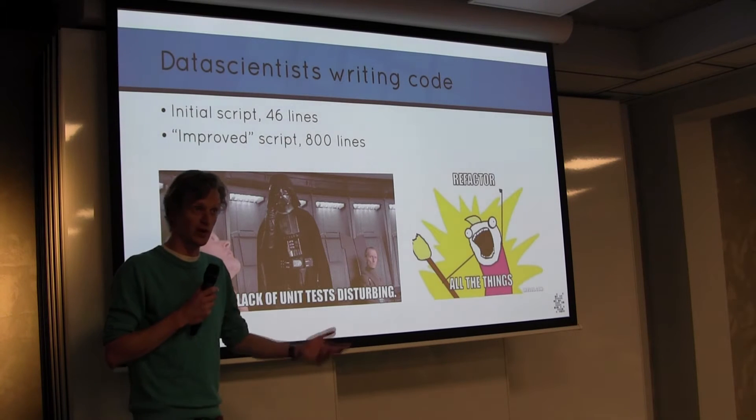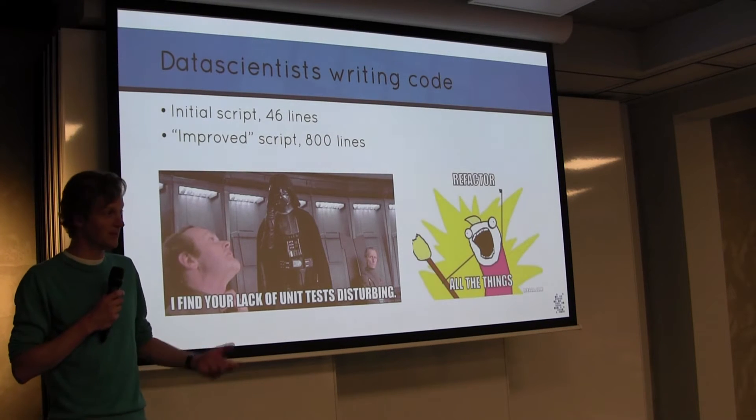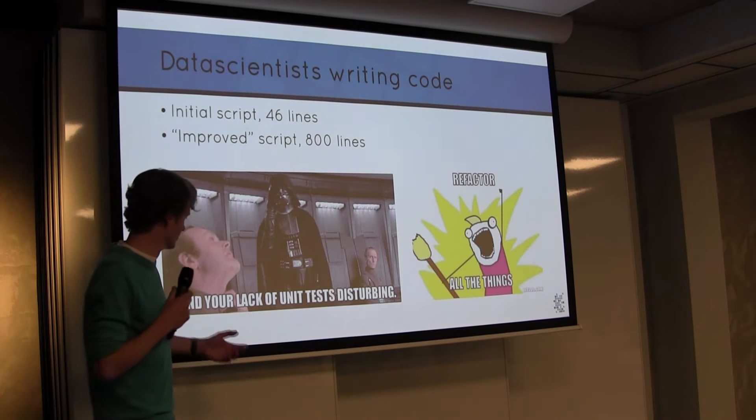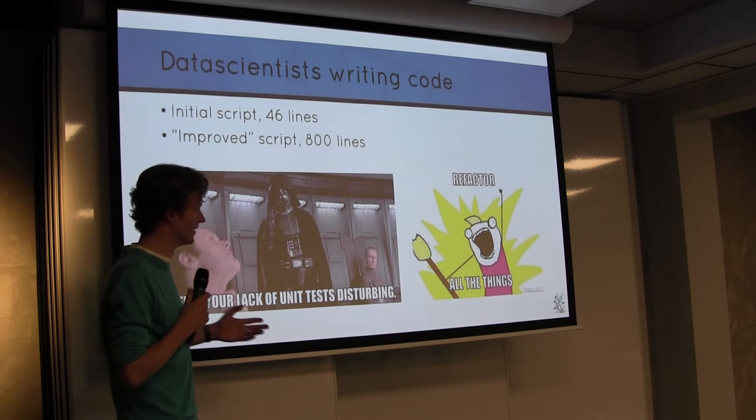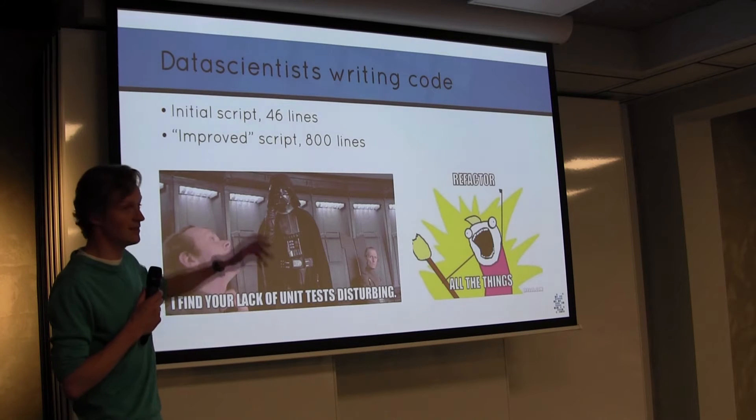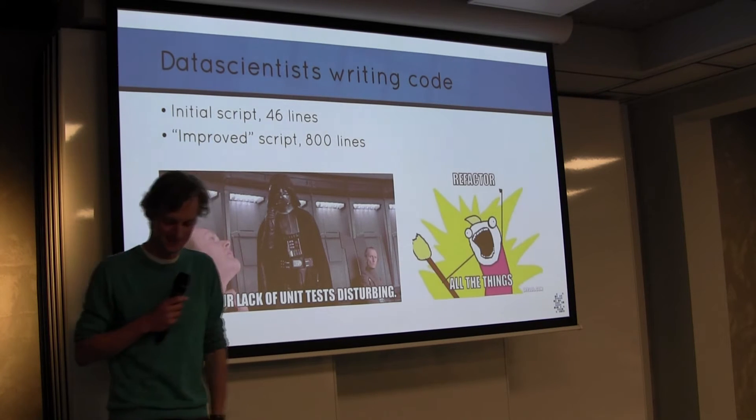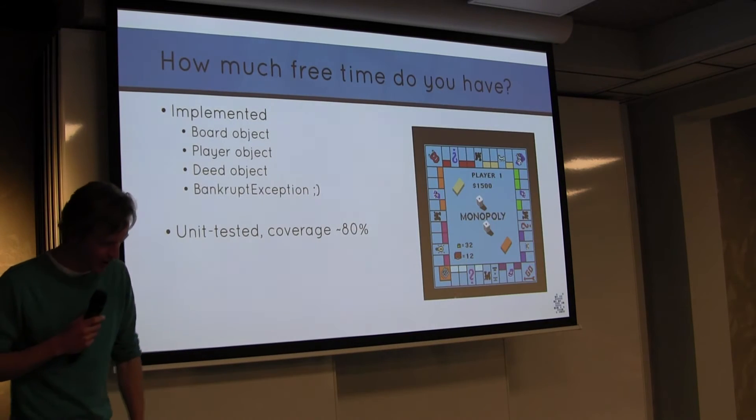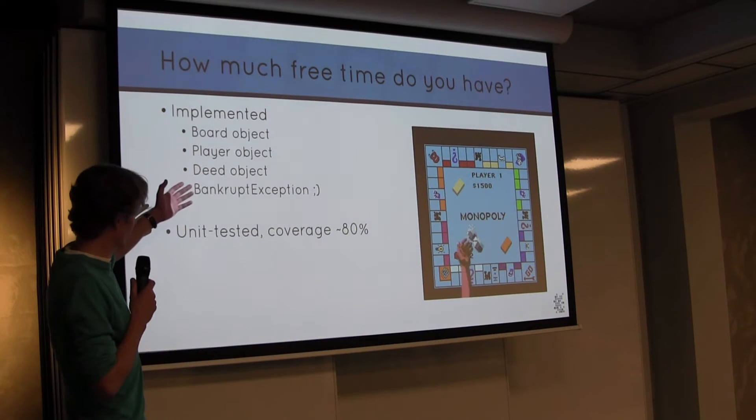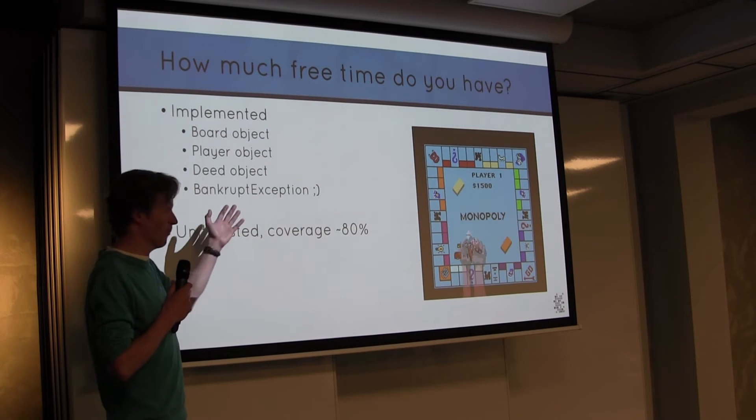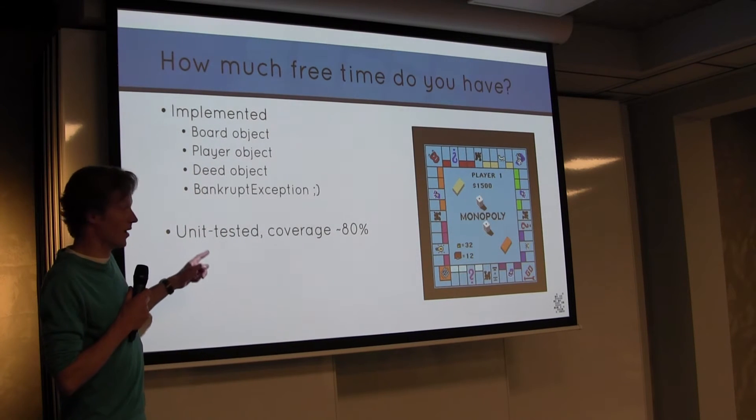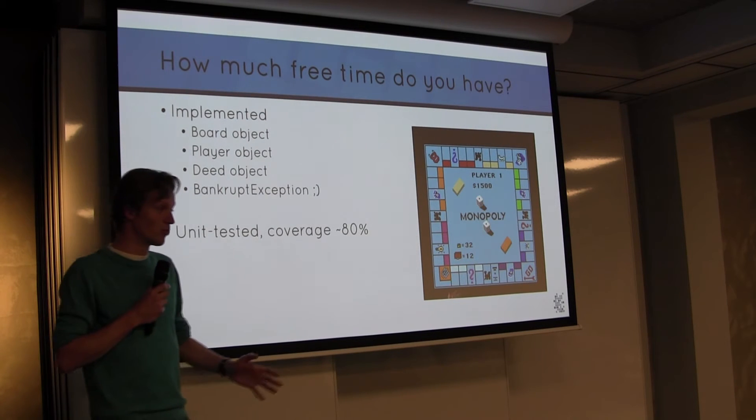But obviously Vincent, my colleague, is a true data scientist. So he made a script, 46 lines of Python. But yeah, I'm a bit of an engineering guy, so the lack of unit testing and no proper stuff. So I improved it. Maybe not so much, but at least it's now 800 lines. That's something, eh? How much free time do I have? So what I implemented is a board object, obviously, a player object, a deed object, and a bankrupt exception. Everybody dreamt of implementing a bankrupt exception, right? And it's actually unit tested, so 80% coverage. It's more or less acceptable.